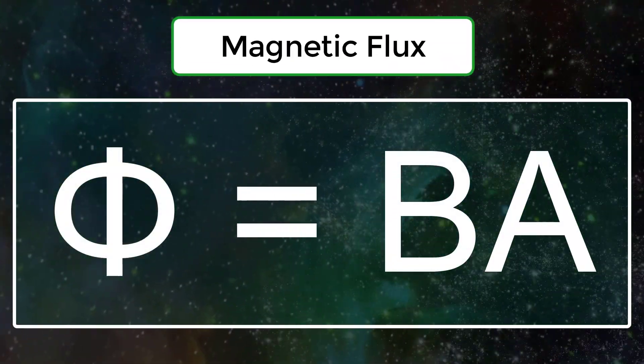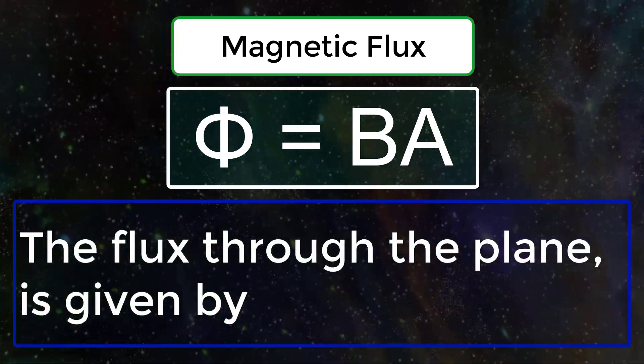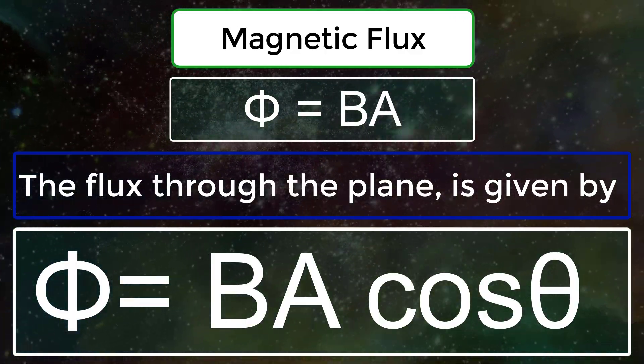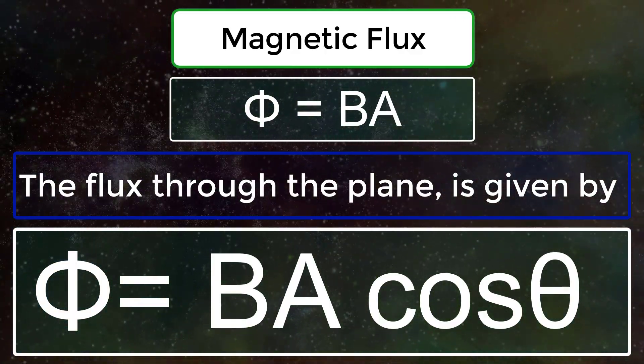Phi is equal to BA. The flux through the plane is given by phi equals BA cos theta. This formula is used when the plane makes an angle with the field.